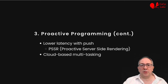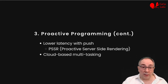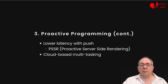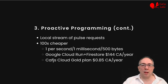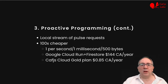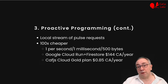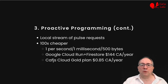Whenever there is a significant change in the state of the CA, and it assumes there is an active client, it renders the page and pushes it to a Redis cache closer to the client. The client can then load it from the cache really fast, even though it is dynamic content. We use PSSR and proactive programming to implement cloud-based multitasking — the goal is to upload computations to the cloud while making them look like local background tasks. The framework implements proactive programming by creating a local stream of Pulse requests. This is very cost-effective: compared with a DIY with Google Cloud Run and Firestore, it is almost 100 times cheaper.